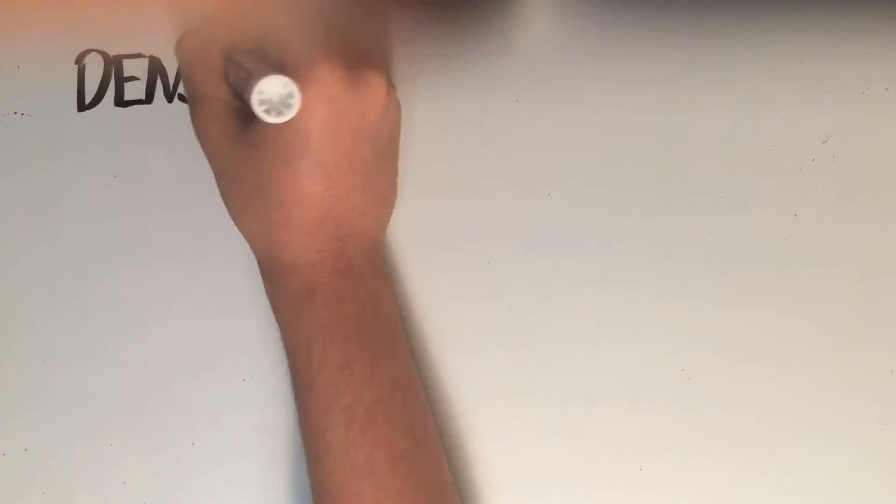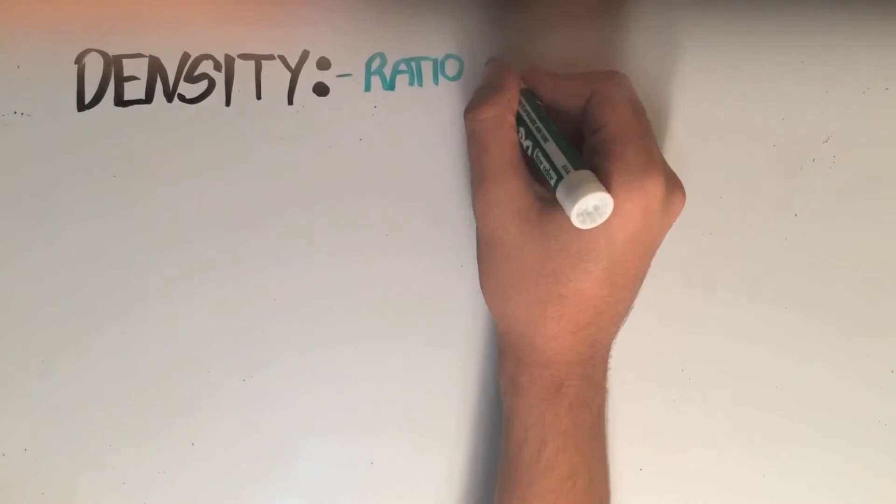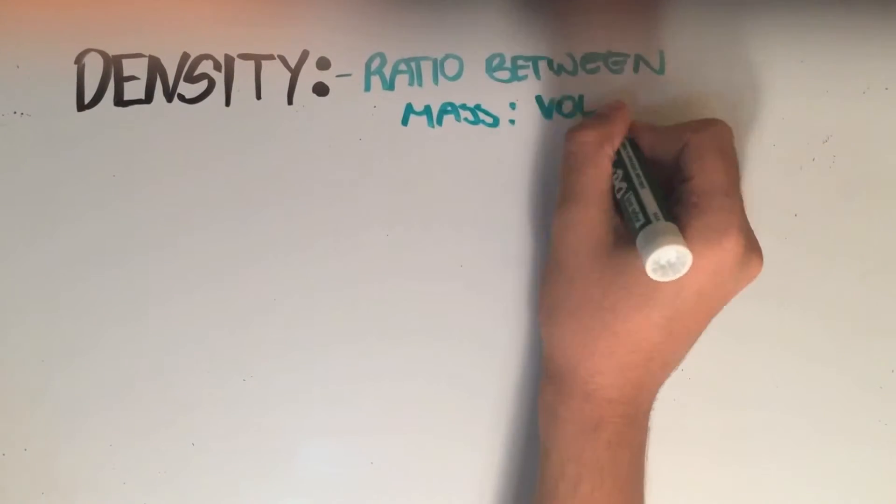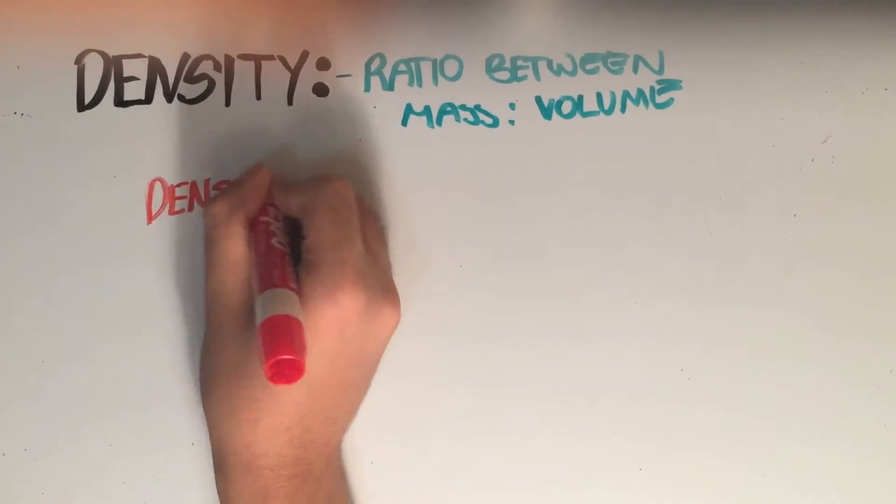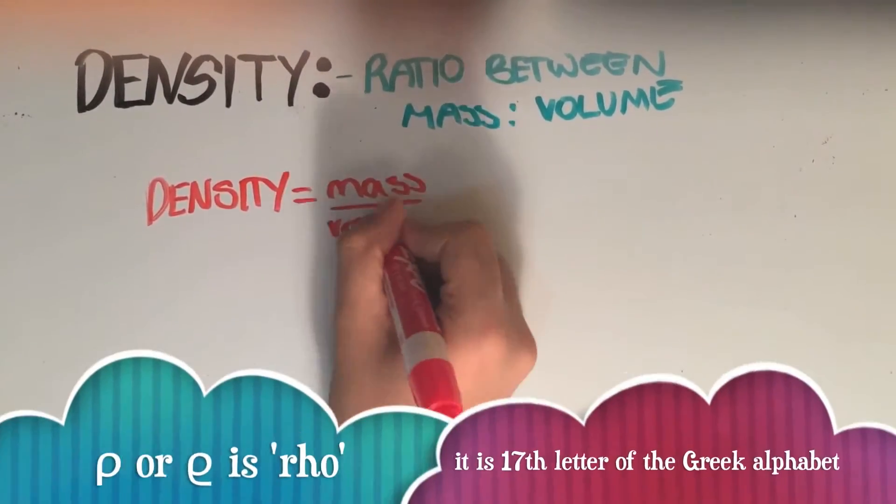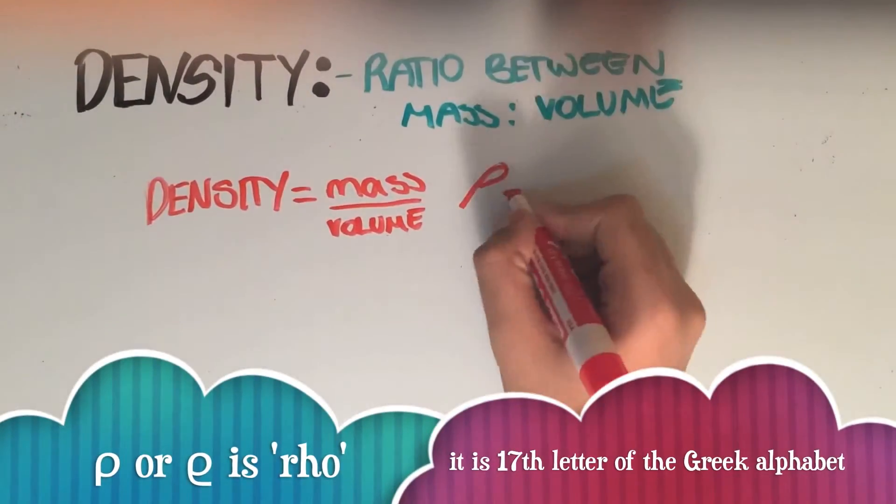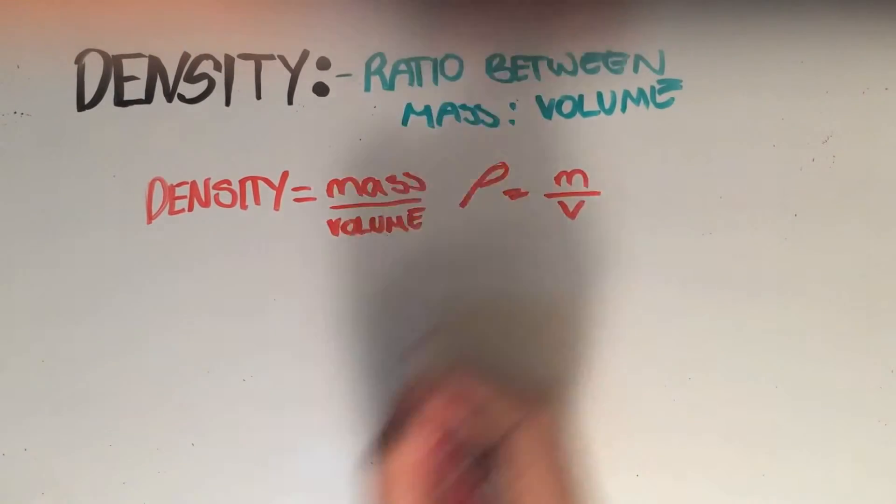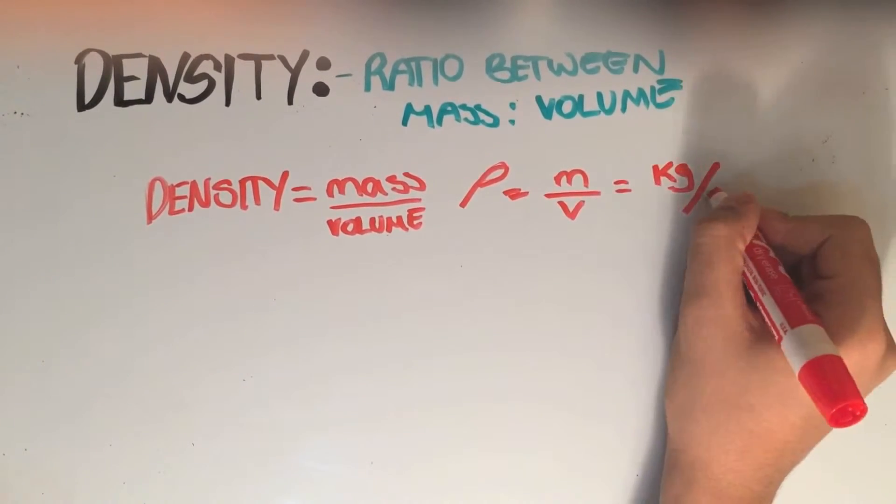Now it's time to talk about density. Density gives us the ratio between mass and volume. It has a formula of mass divided by volume. In symbols, this can be written as rho equals m over v. It therefore has the units of kilogram per centimeter cubed.